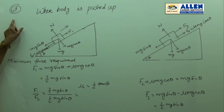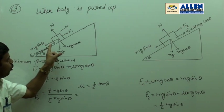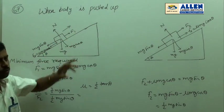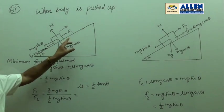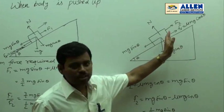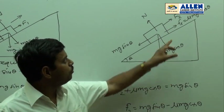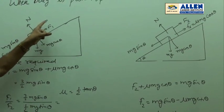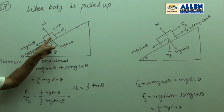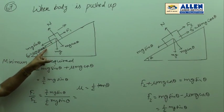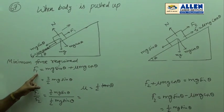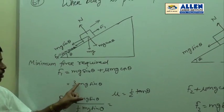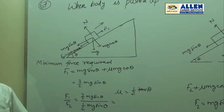The next question is number 67. A block is pushed up an inclined plane of inclination theta. The minimum force required to push it up is F1, and when the block is prevented from slipping the minimum force required is F2; the ratio F1 to F2 is required. When the body is pushed up, mg sine theta acts downward and frictional force mu mg cos theta also acts downward, so F1 equals mg sine theta plus mu mg cos theta. Since mu equals half tan theta, F1 equals 3 by 2 mg sine theta.